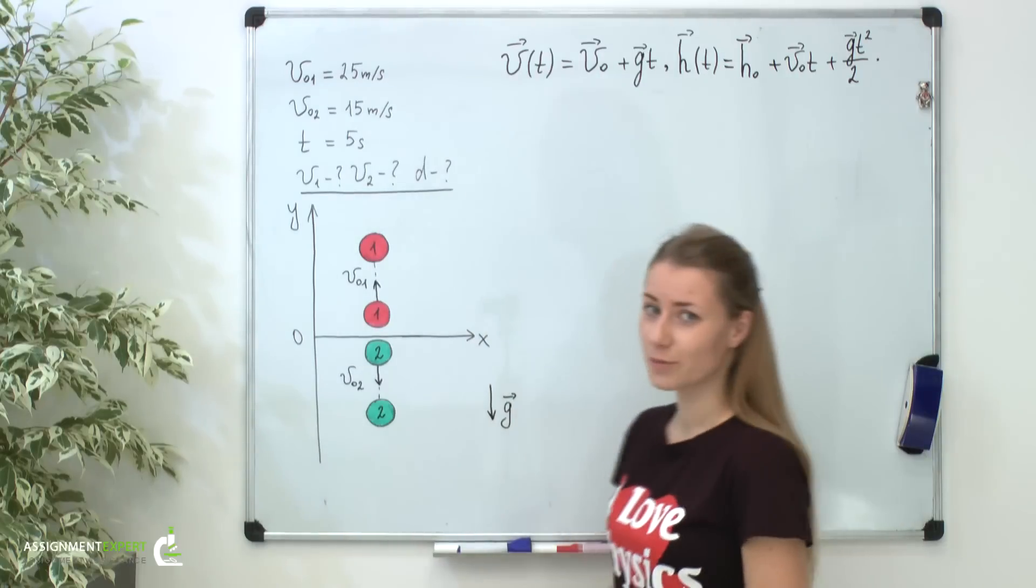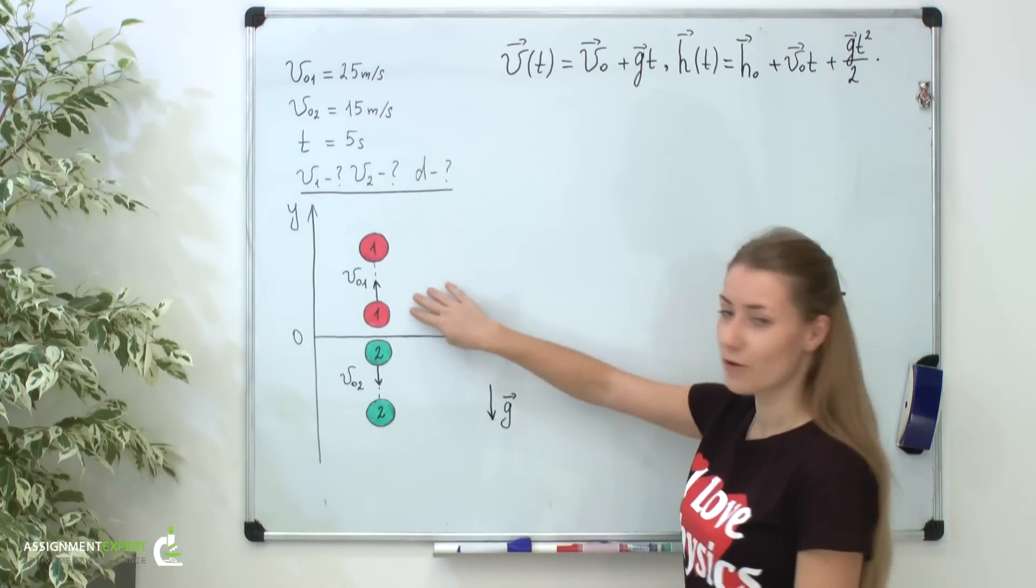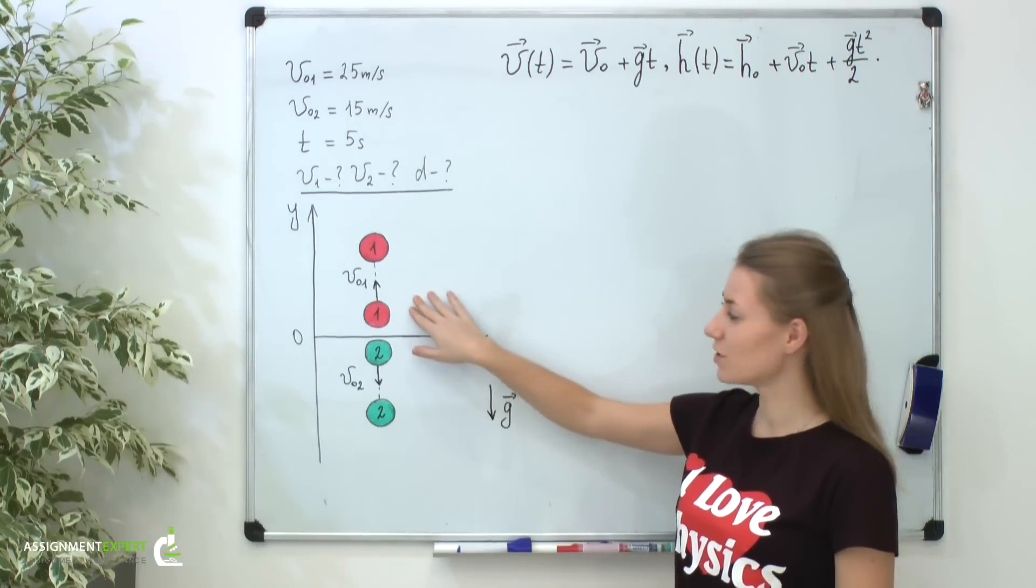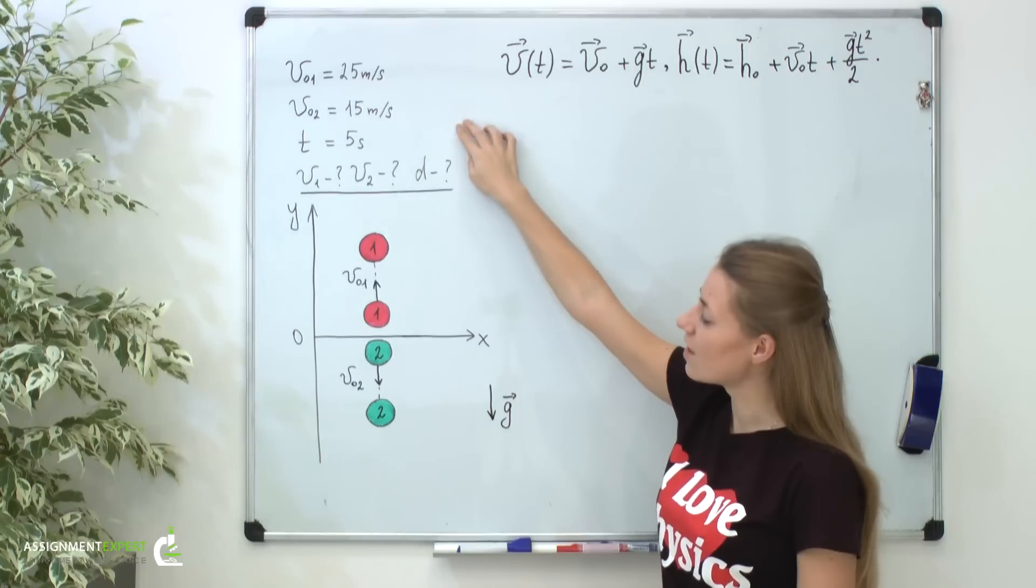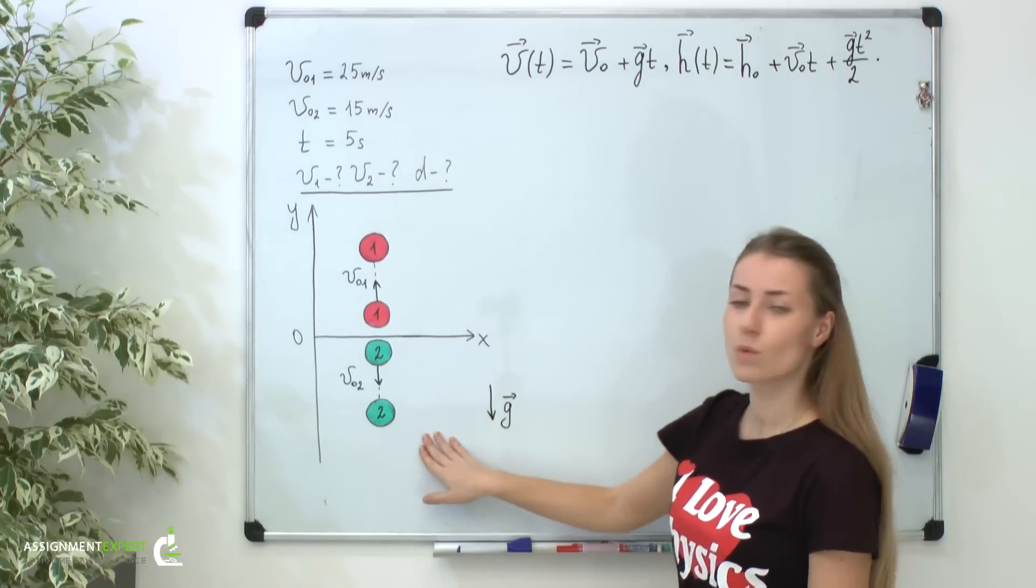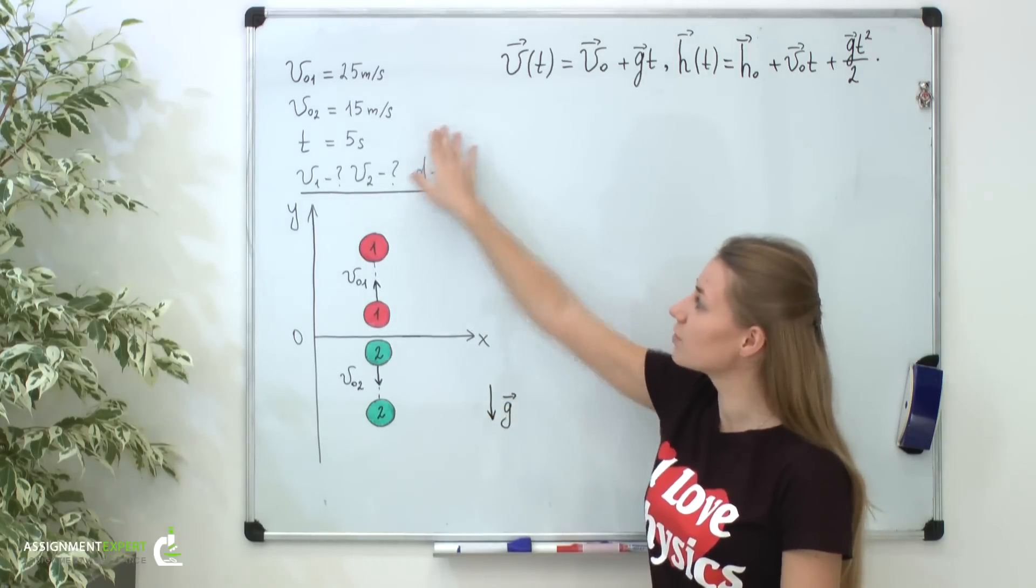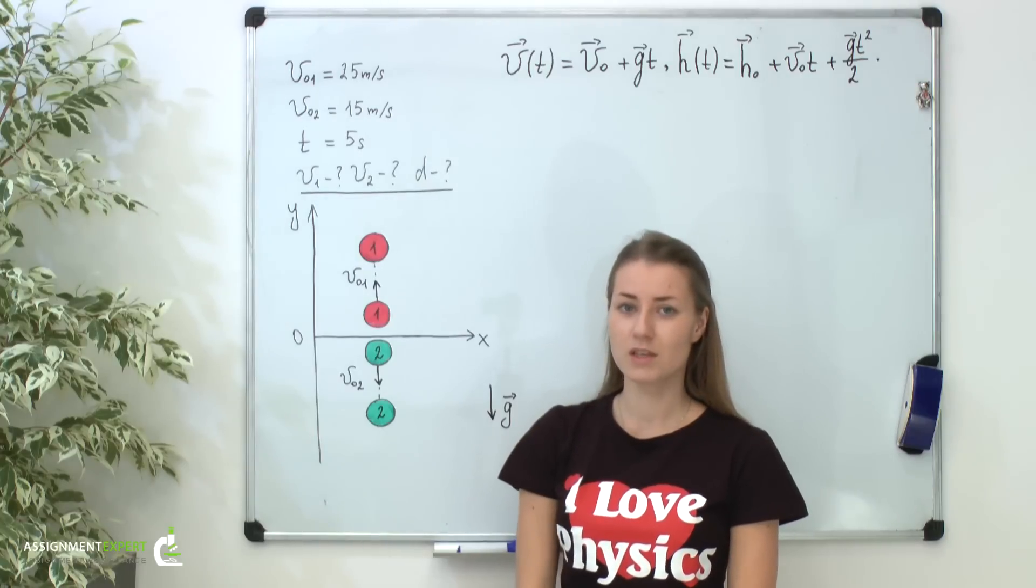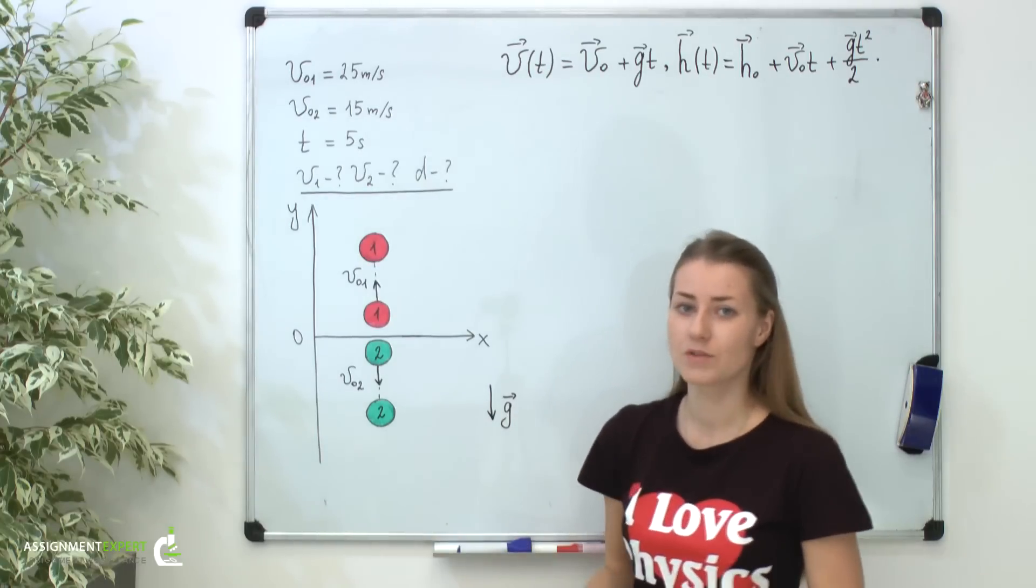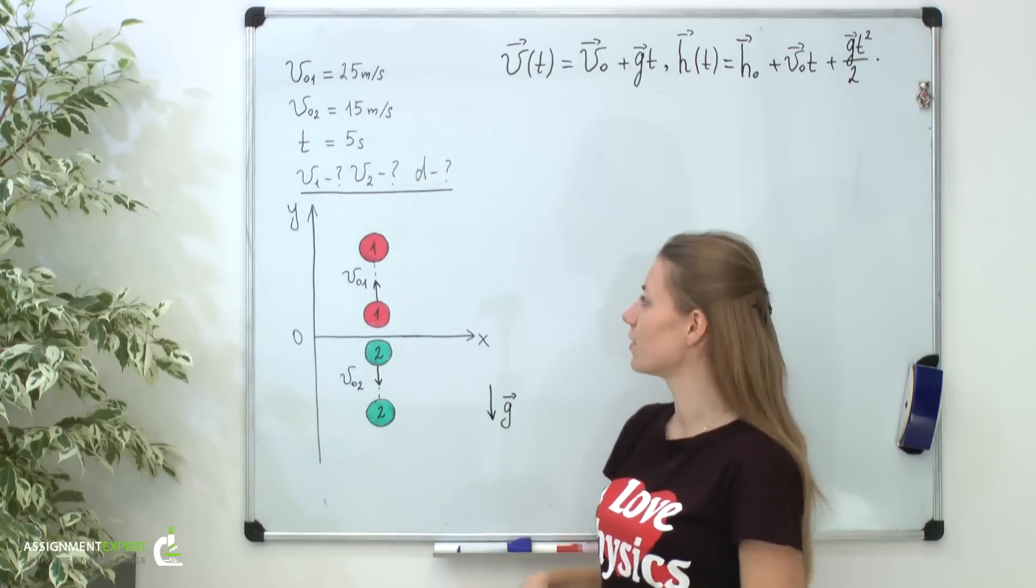Consider the following problem. Two balls are thrown from the same point at the same time, one vertically upwards with initial speed of 25 meters per second and other vertically downwards with the speed of 15 meters per second. Our task is to find velocities and the distance between these two balls after 5 seconds from the moment of the throw.